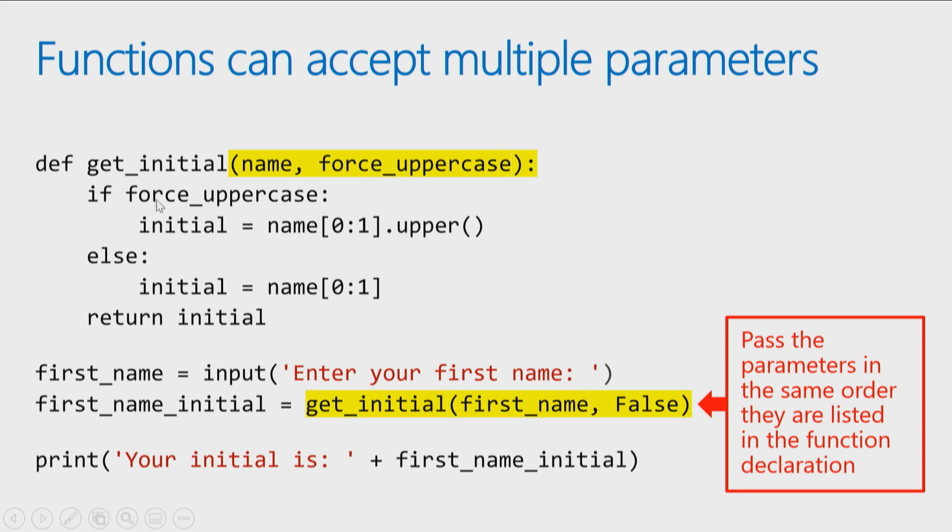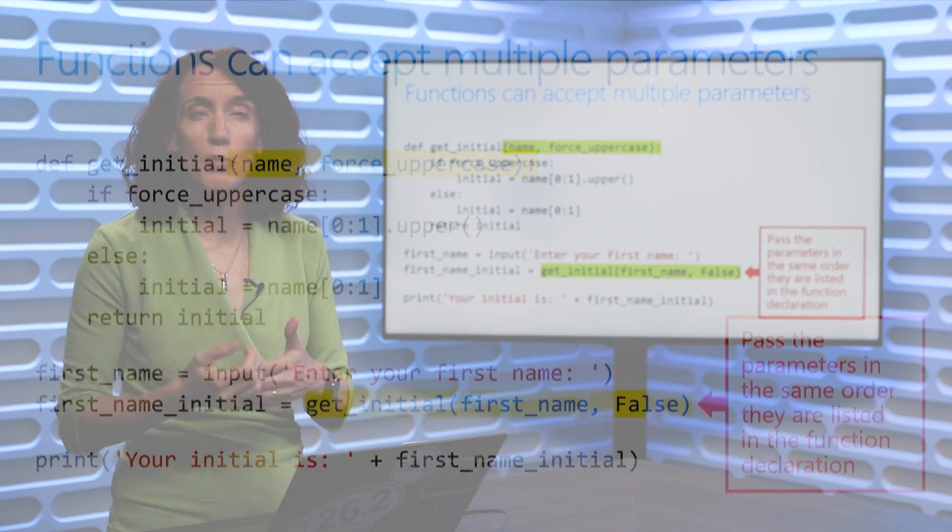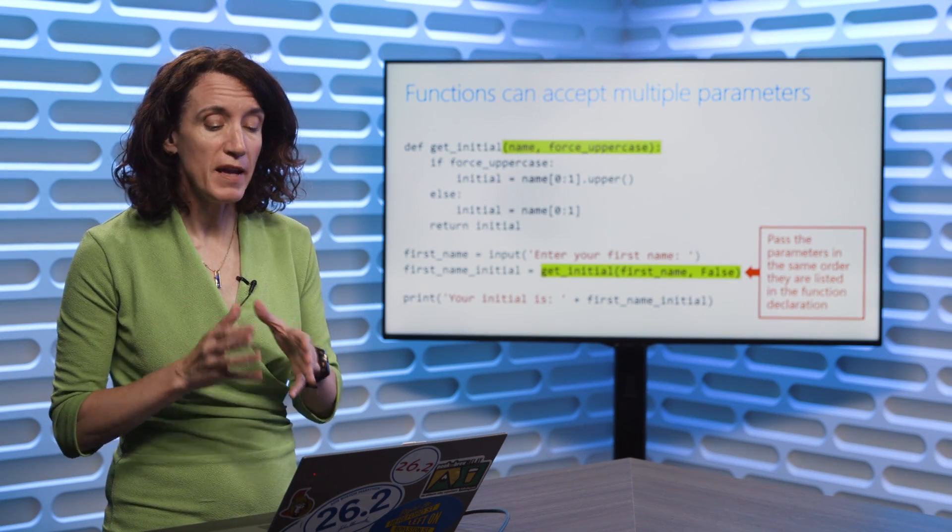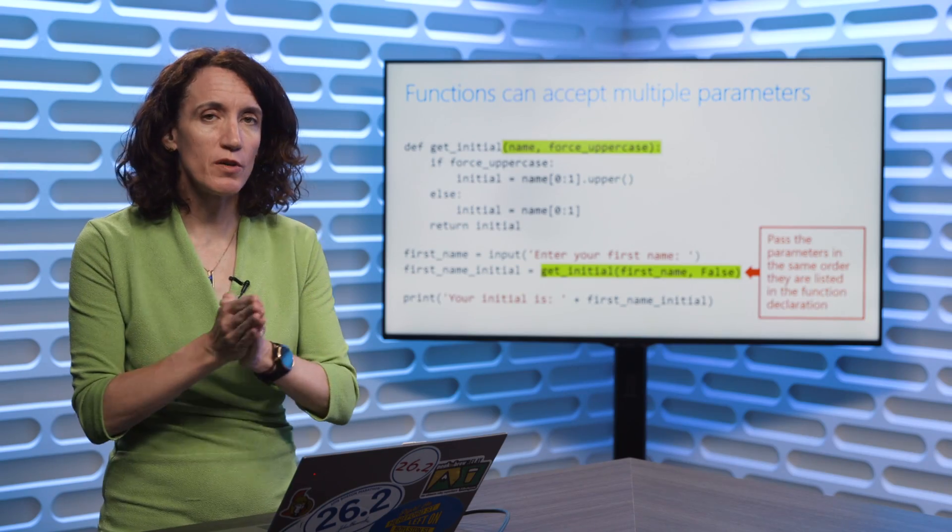And then inside my function, I say if you've said I wanted to force to uppercase to true, then return it forced uppercase, otherwise whatever case was passed in. So you can pass multiple parameters to a function, but make sure if you do have multiple parameters, make sure you pass the parameters in the order they're declared.